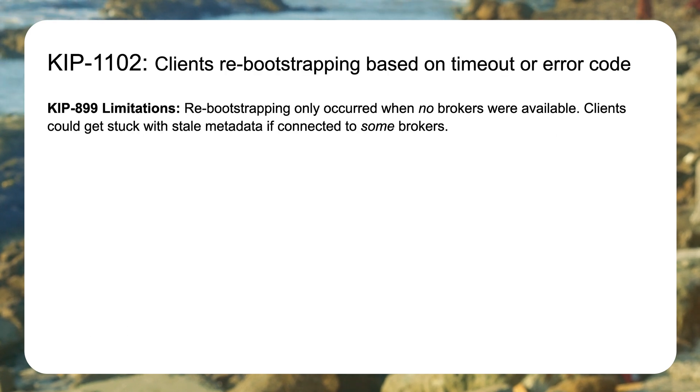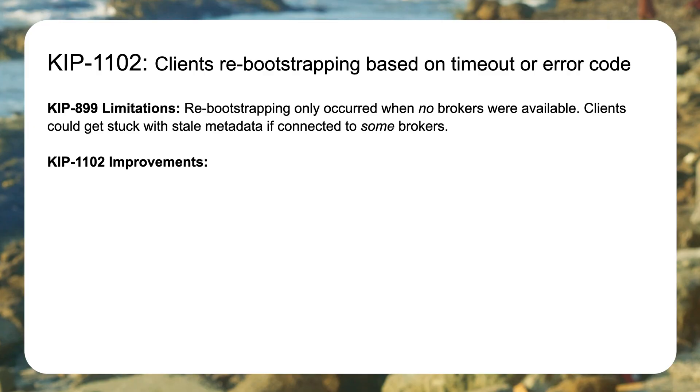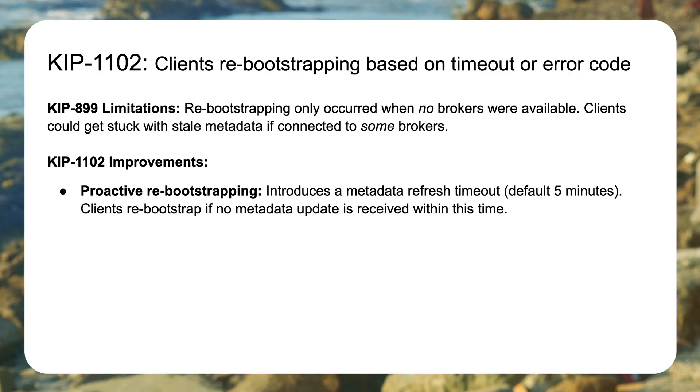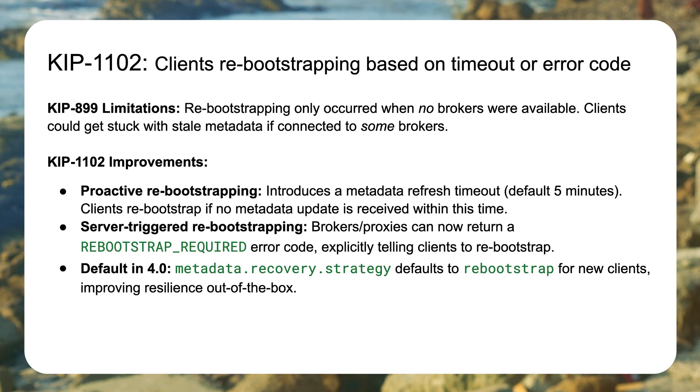KIP 1102 improves on KIP 899, which has to do with re-bootstrapping. Bootstrapping is when a client comes up, talks to a broker, and gets the metadata it needs about all the nodes in the cluster — that metadata is constantly refreshed while the client is talking to the cluster. But imagine a Rip Van Winkle scenario: the client goes down for a long time, the whole cluster changes, all the brokers have different names and addresses. The application comes back up and sees stale metadata that doesn't work anymore. KIP 1102 gives you proactive re-bootstrapping at a configurable interval, or server-triggered re-bootstrapping, so that in this scenario you're protected against stale metadata.